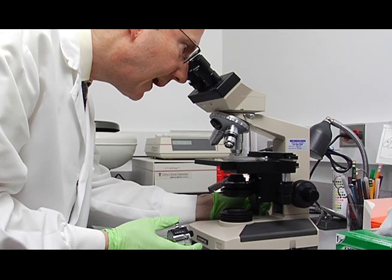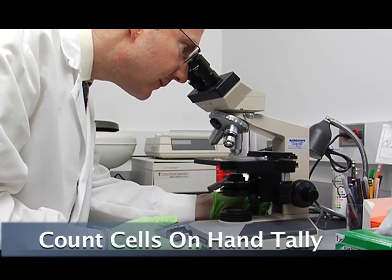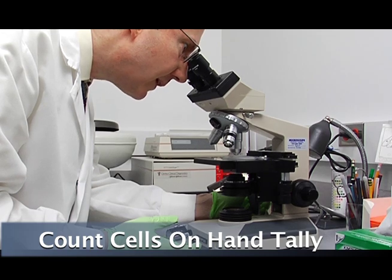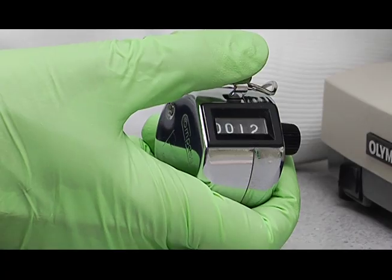The cells will show up as dark or bright spots in the hemocytometer. As you find each cell, click it on the hand tally.